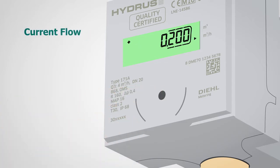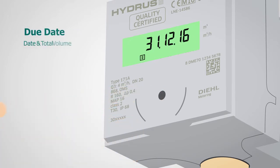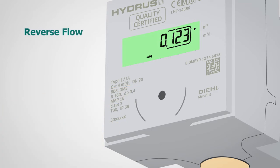Due date (the date and its total volume), reverse flow, software version, and the remaining battery life. That makes for excellent transparency.